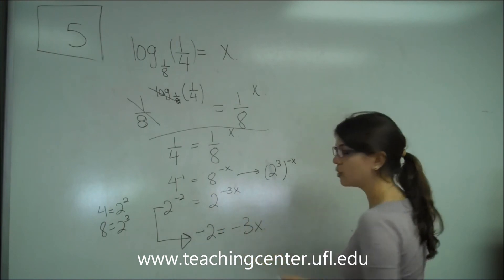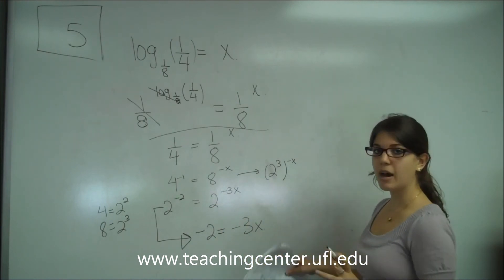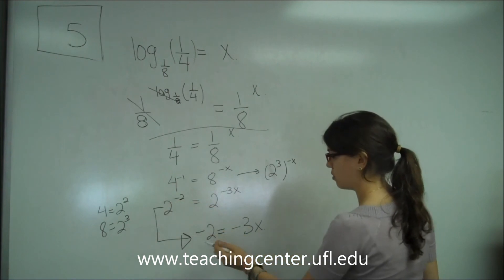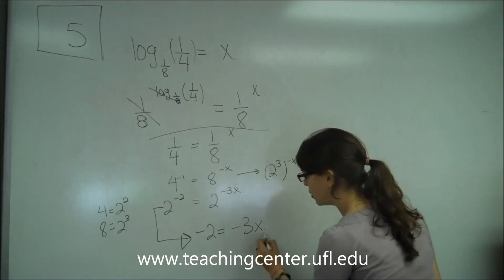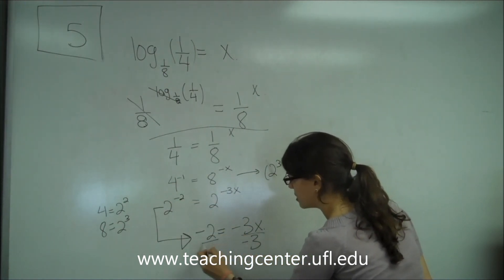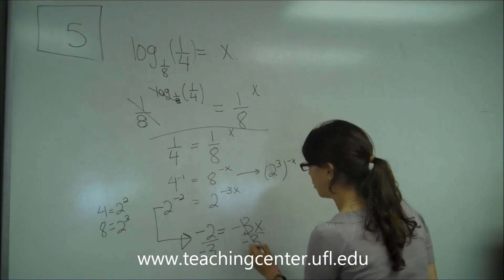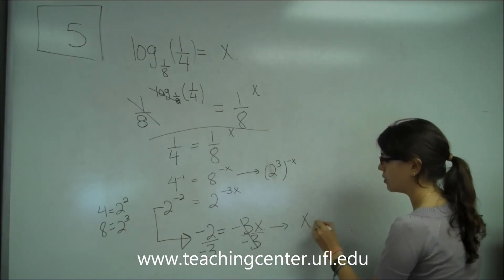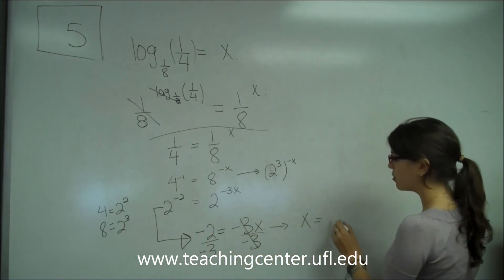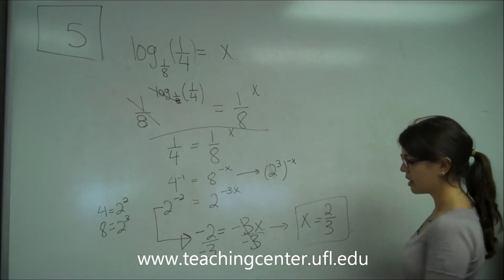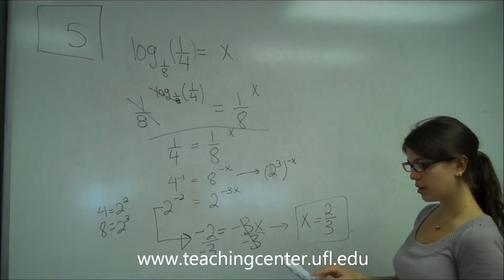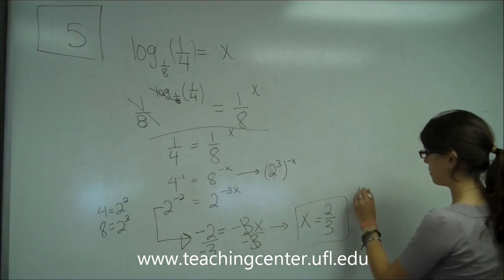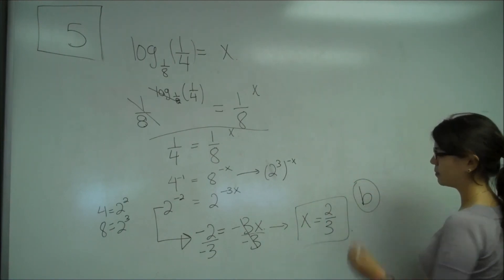So x has to multiply 3, negative 3, somehow to make it equal to negative 2. And that's what we're doing here. So let's divide by negative 3. This is simple algebra now. So we cancel that and we get x equals negative 2 divided by negative 3 becomes positive 2/3. And that's actually our answer, which is b.